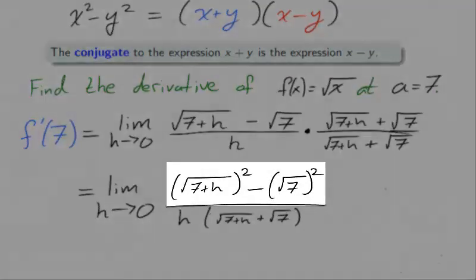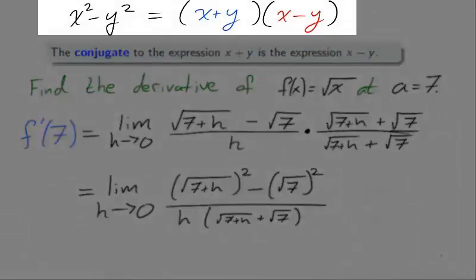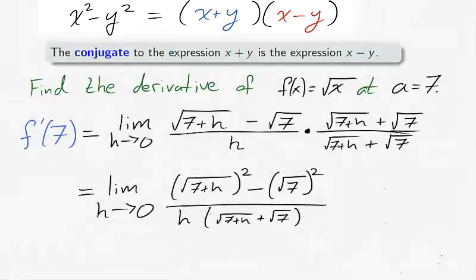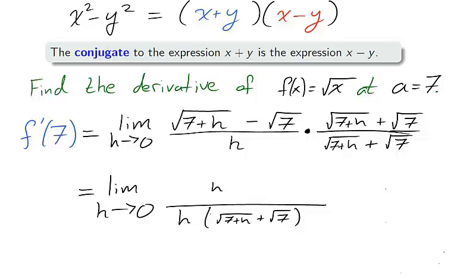We use the conjugate property in the numerator. Remember that the conjugates form a twin to the factorization of the difference of squares. And we leave the denominator undisturbed. Because the square and the square root cancel each other out, we are left with 7 plus h minus 7. Cleaning up the numerator with arithmetic, we're left with h in the numerator and h in the denominator, which we cancel.